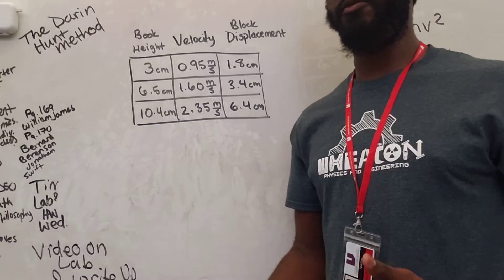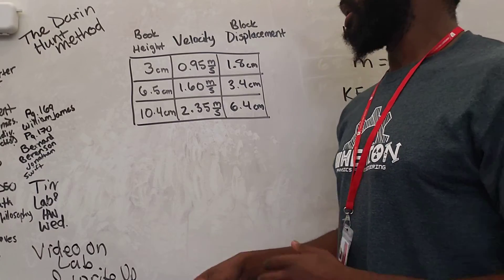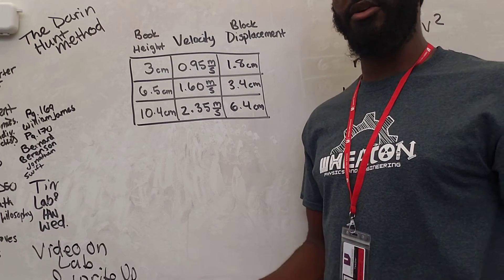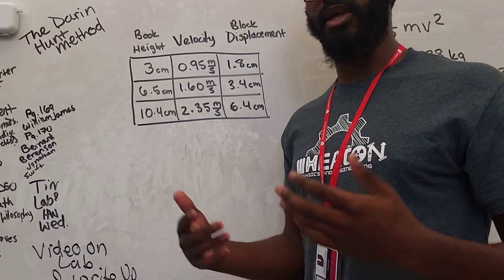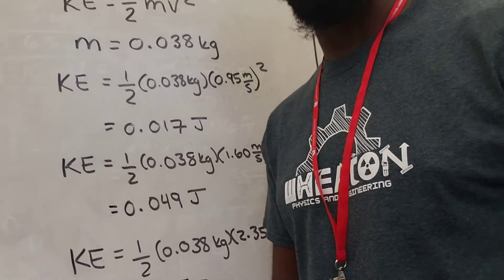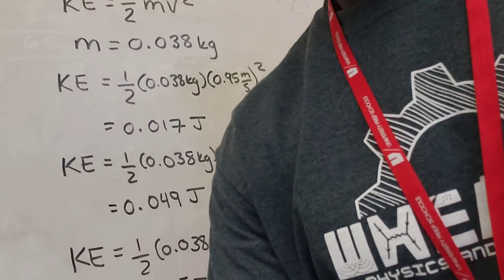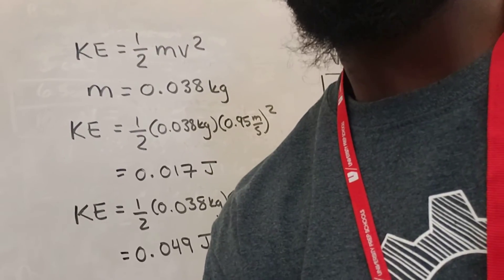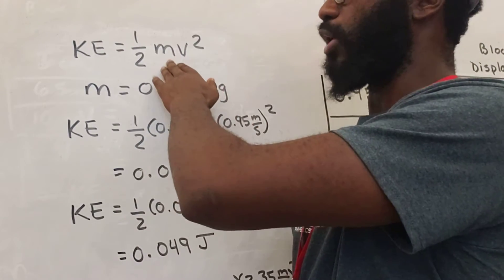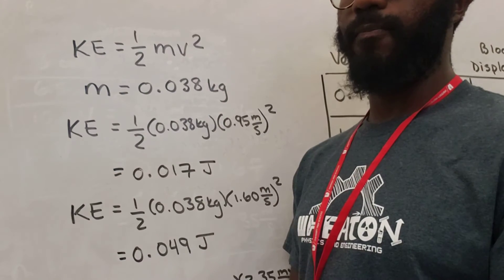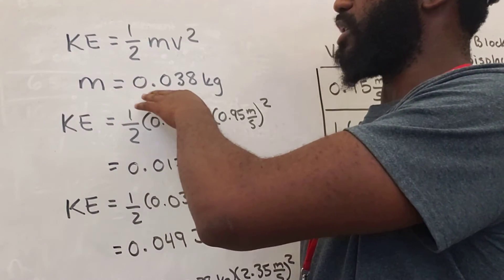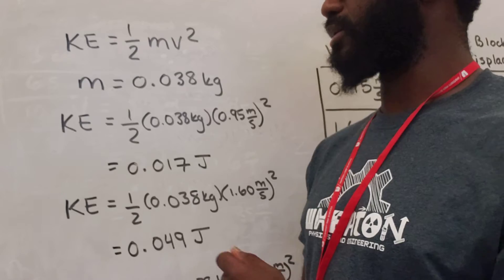Now we're going to move on to the next part of this lab where we calculate the kinetic energy. We visually see how far the block was moved, but we actually want to know precisely what the energy of our car was as it rolled down that ramp and struck the block. The kinetic energy equation is: KE equals one-half the mass of our car times the car's velocity squared. I already measured our car's mass — M equals 0.038 kilograms.